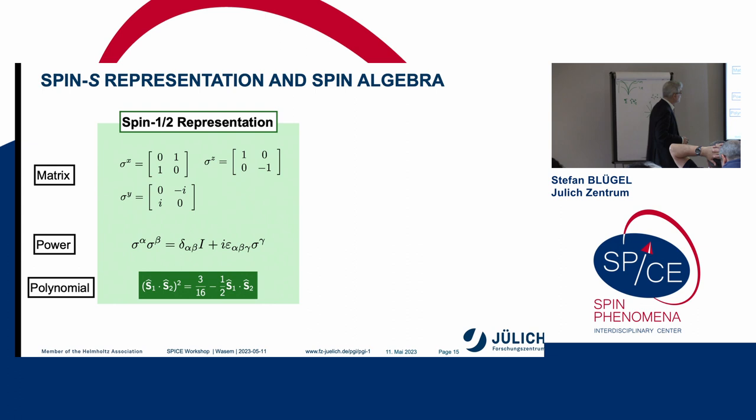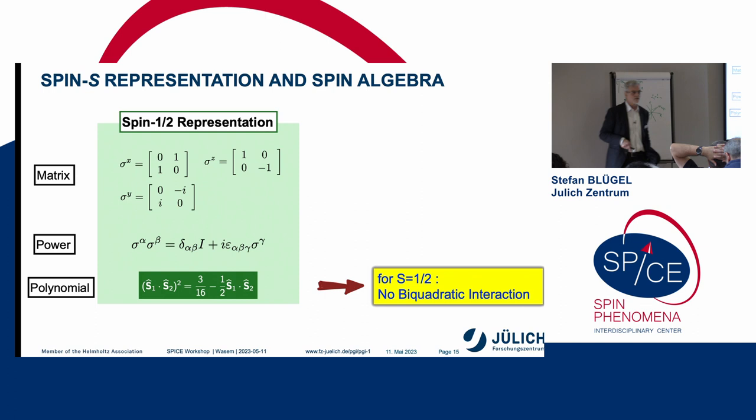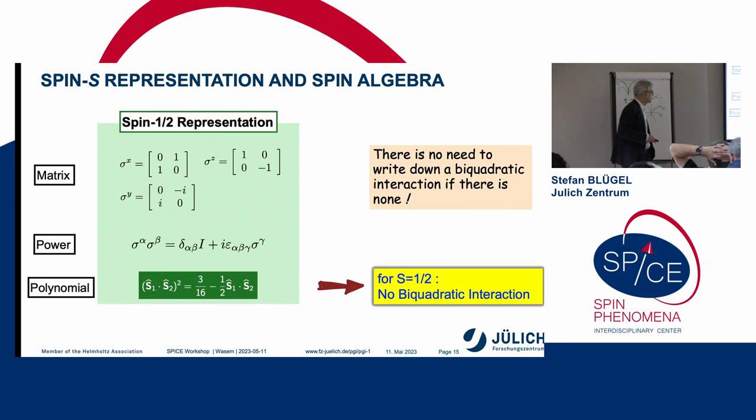You have a spin-1/2 system. You have a spin-1/2 representation. The spin-1/2 representations are the three Pauli matrices of this spin vector quantity. These spin Pauli matrices have some algebra. And now, if you do the following, you take the square of two spin-1/2 spins, and then you see it reduces to a Heisenberg term. So that means this bi-quadratic term is not linearly independent.